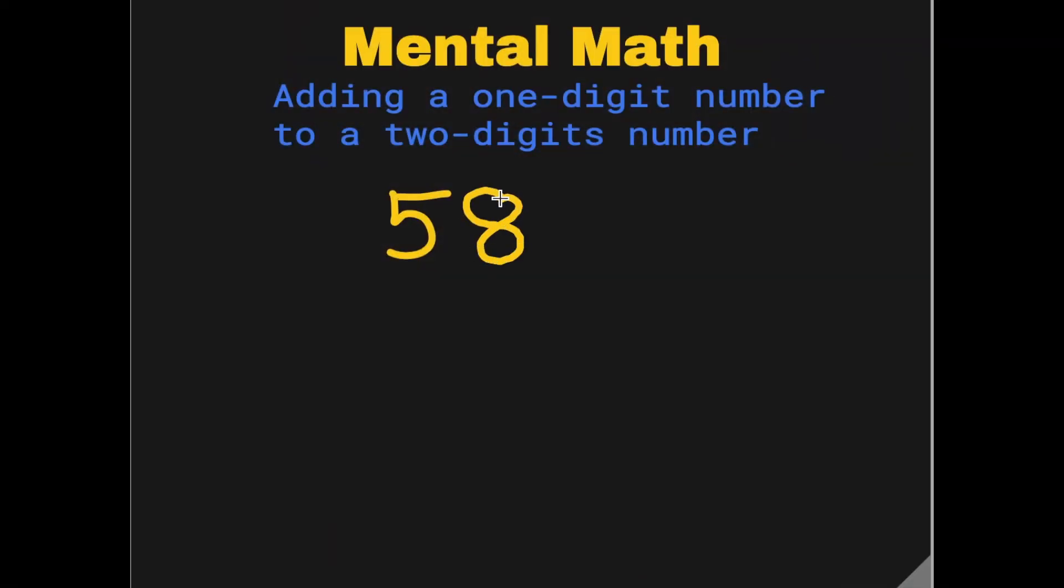58 plus 3. Now instead of using those imaginary circles, what you can do is 50 plus 8 plus 3. Using the class 1 mental trick, you can borrow a 2 from 3 to make this into a 10.